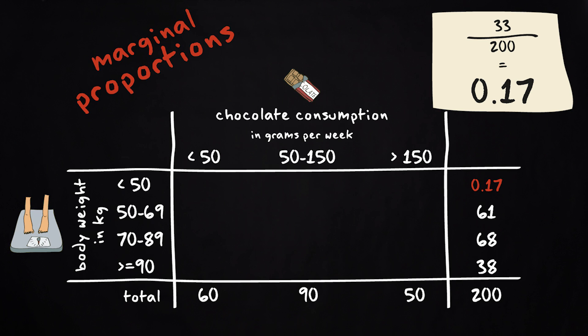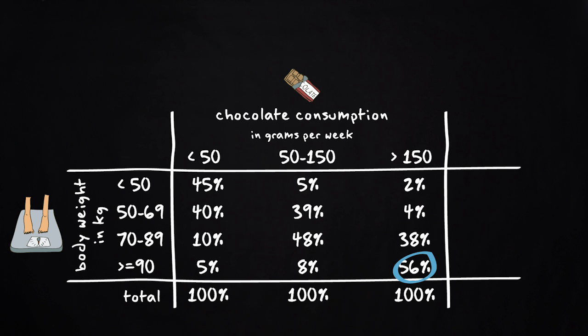So what does this mean? Of those who eat more than 150 grams of chocolate per week, 56% weighs 90 kilograms or more. Of those who eat less than 50 grams of chocolate, only 5% weighs 90 kilograms or more. Also, of those who eat less than 50 grams of chocolate, 45% weighs less than 50 kilograms. While of those who eat more than 150 grams of chocolate, only 2% weighs less than 50 kilograms.